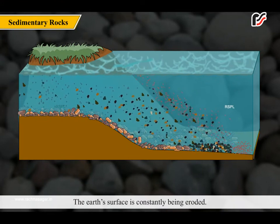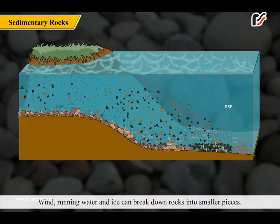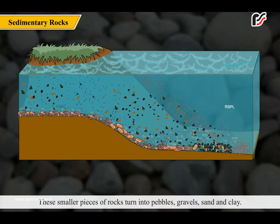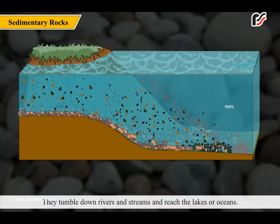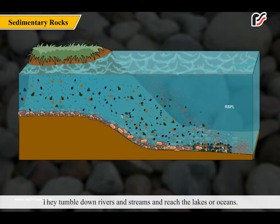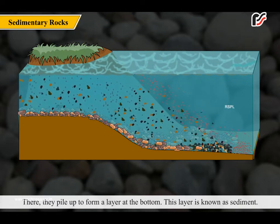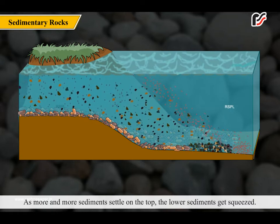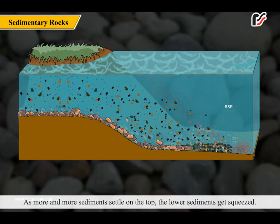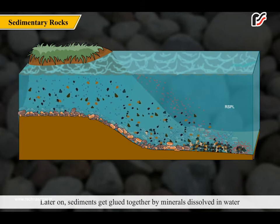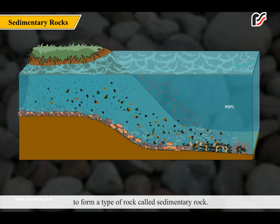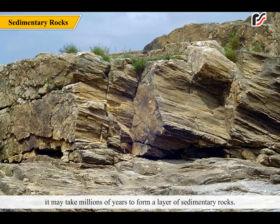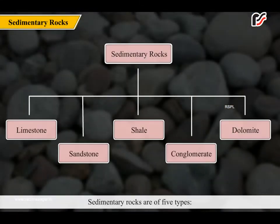The earth's surface is constantly being eroded. Wind, running water and ice can break down rocks into smaller pieces. These smaller pieces of rocks turn into pebbles, gravels, sand and clay. They tumble down rivers and streams and reach the lakes or oceans. There, they pile up to form a layer at the bottom, known as sediment. As more and more sediments settle on top, the lower sediments get squeezed. Later on, sediments get glued together by minerals dissolved in water to form sedimentary rock. It may take millions of years to form a layer of sedimentary rocks.